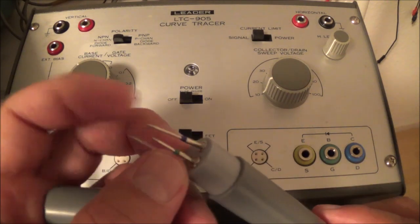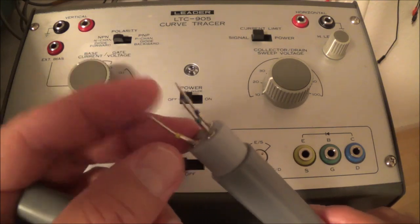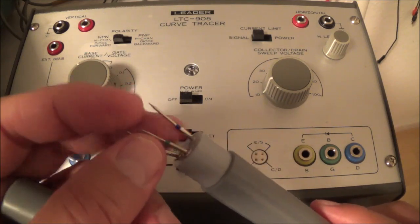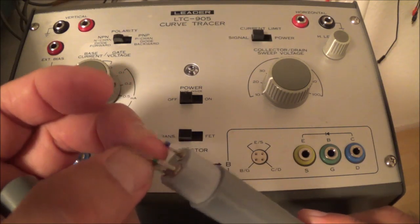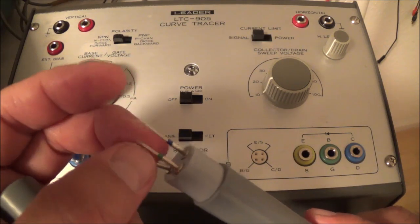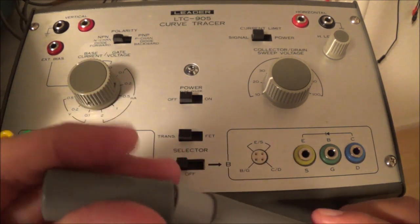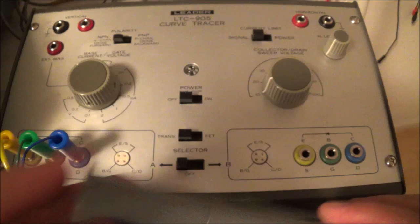This thing has got three sharp probes on it and they're color-coded so you know what they're for. Like for example, one's for the collector, one's for the base and one is for the emitter and of course that just plugs into here.